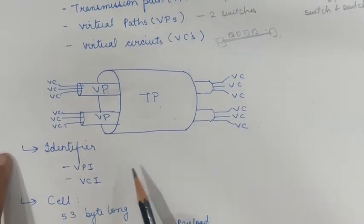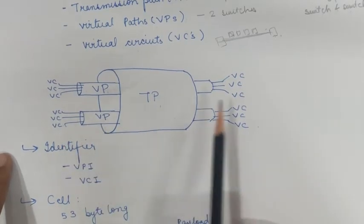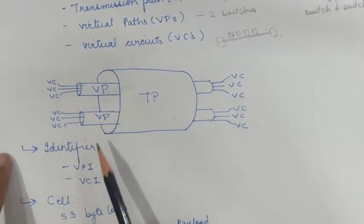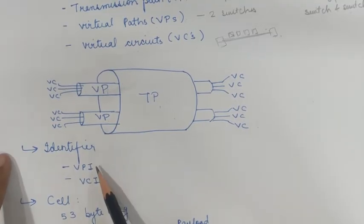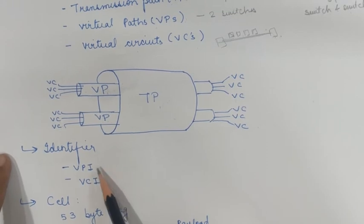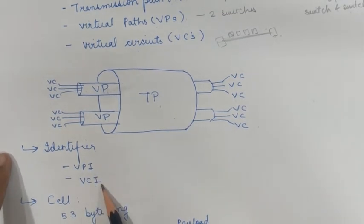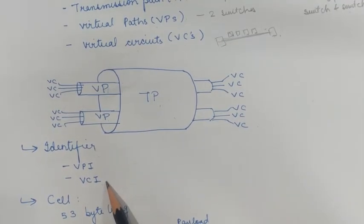To route data from one point to another, there is a need for identifiers. For this purpose, hierarchical identifiers are used. The first is the Virtual Path Identifier, or VPI, which defines the specific virtual path. The second is the Virtual Circuit Identifier, or VCI, which defines the specific virtual circuit.